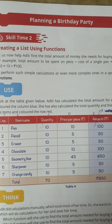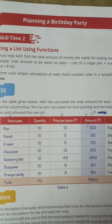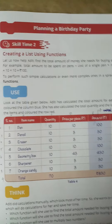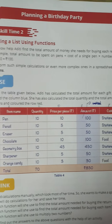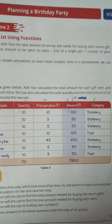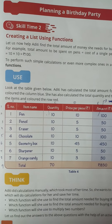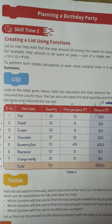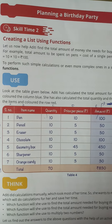Here we are calculating the amount spent on pens: equal to cost of a single pen multiplied by number of pens. The cost of a single pen is taken as 10 and the total number of pens is also 10. So when we multiply 10 into 10 we get 100.